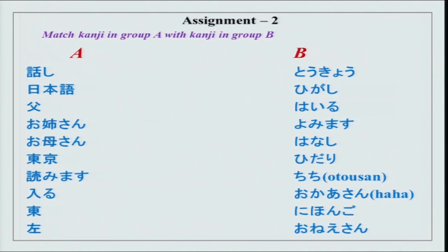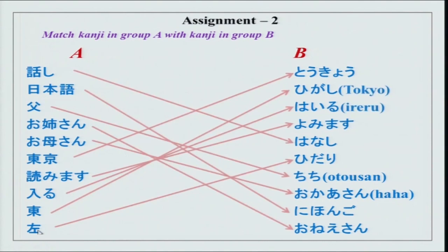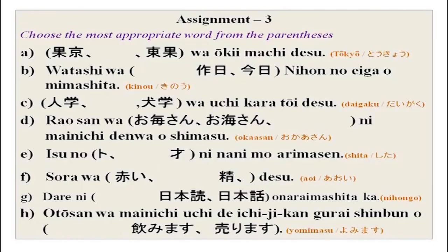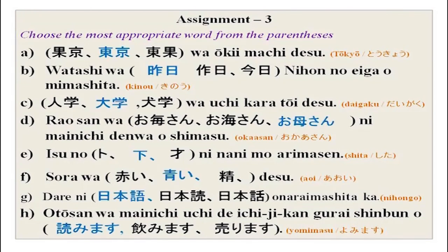The second assignment is to match kanji in group A with kanji readings in group B. This is your kanji section — each character will have minimum two readings: one the Chinese and one the Japanese reading. Then choose the most appropriate word from the brackets. I hope you did your kanji section properly.